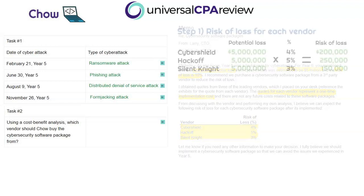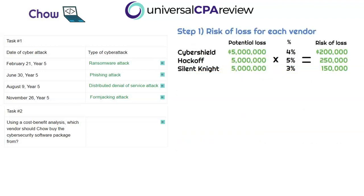There are three basic steps to perform. Step one: calculate the risk of loss for each vendor. We take the potential loss of $5 million from the memo and multiply by the risk percentage for each company. For CyberShield at 4%, that's a risk of loss of $200,000. The same calculation applies to Hackoff at 5% and Silent Night at 3%. Based purely on risk of loss, Silent Night has the lowest at $150,000 — but we haven't yet factored in the cost to implement.